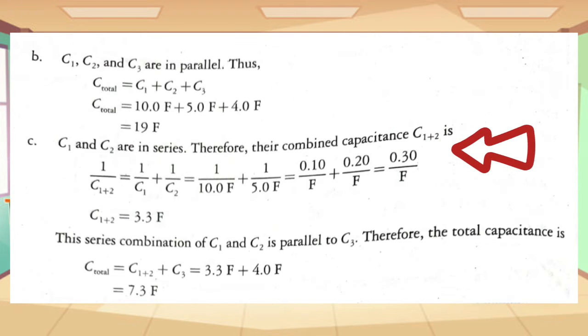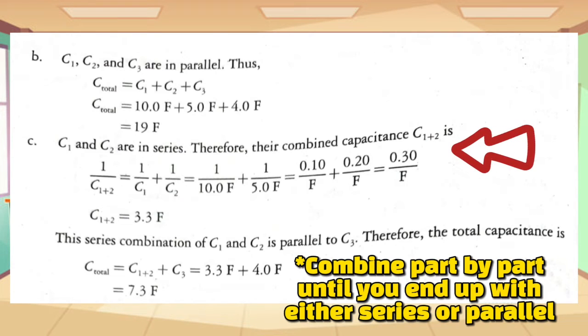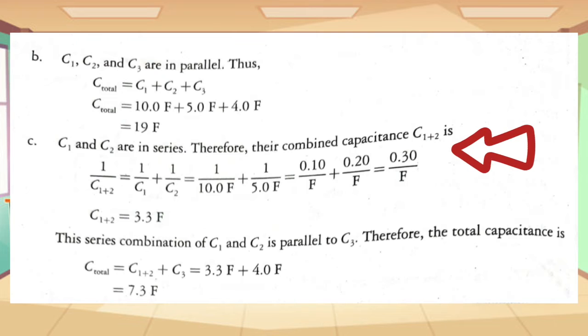And now, for diagram C, it shows to us a combined series and parallel connection. With that problem, what we do is we combine part by part up until we end up with either series or parallel. We analyze by looking into the illustration which pair of capacitors will we combine first. The diagram tells us that C1 and C2 are connected in series. Therefore, we combine them first, thus having now the value of C1 plus 2. Since they are connected in series, we follow the rules in series in calculating the total capacitance. Therefore, we add the reciprocals of the values of C1 and C2.